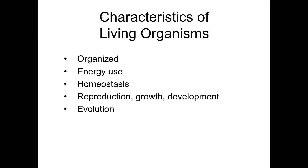Nine out of ten questions will essentially be on the five characteristics of living organisms. Generally there are about two questions per concept. Sometimes you'll get one of one concept and two of everything else — there's no clear rule on which gets one or two, but everyone will get at least one question on each of the five concepts and a second question on most of them. The five characteristics are: organized, use energy, maintain homeostasis, reproduce, and evolve.